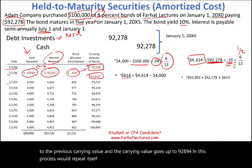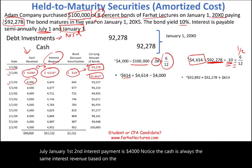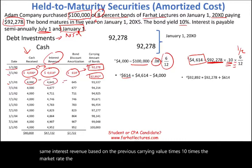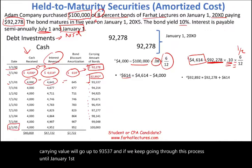On January 1st, the second interest payment is $4,000 — notice the cash is always the same. Interest revenue is based on the previous carrying value times 10% times the market rate. The difference between them is the discount amortized, and the carrying value goes up to $93,537. If we keep going through this process until January 1st, 20X5, by the time the bond matures, notice it goes back to $100,000.